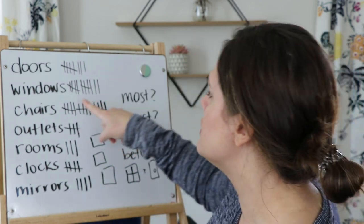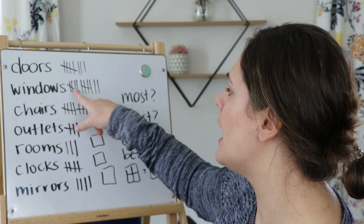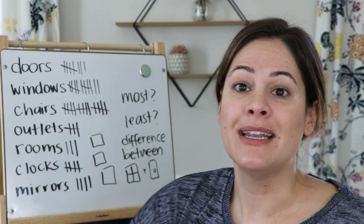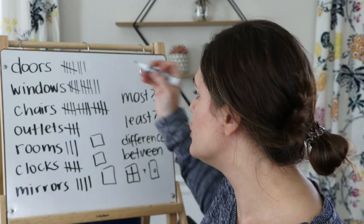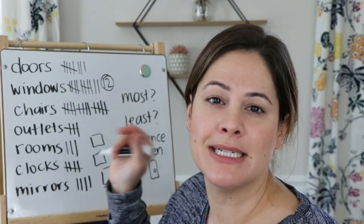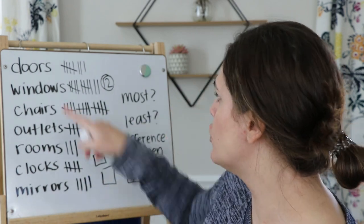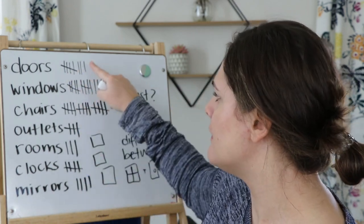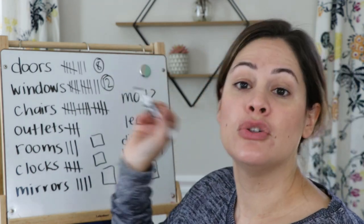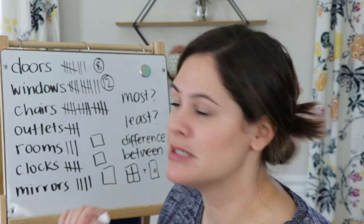You will have to count them up. So if I have my windows here I have groups of five — five, ten, eleven, twelve. Next to that I want you to write down the number twelve. This way we can really see and compare what we have the most of. For doors: five, six, seven, eight — I have eight doors. Do that for all of your different items that you found around your house.